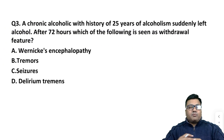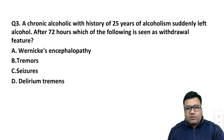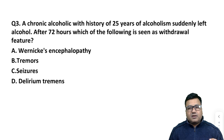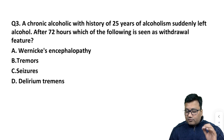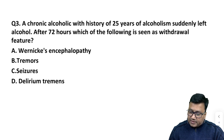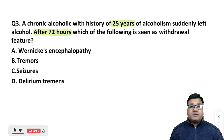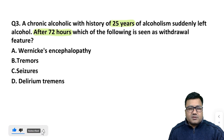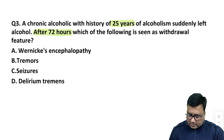Let's move on to question number 3. A chronic alcoholic with a history of 25 years of alcoholism suddenly left alcohol. After 72 hours, which of the following is seen as a withdrawal feature? The question clearly says he has been a chronic alcoholic for 25 years, he suddenly left alcohol, and 3 days after leaving alcohol what should be seen.